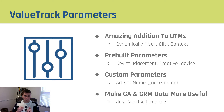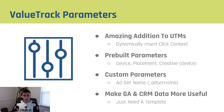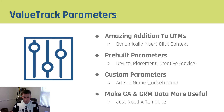Value track lets you put prebuilt parameters that are dynamically populated, so you can look at things like device, placement, the creative, the keyword that someone searched for, the position of the ad — all of those little details. Or you can create custom parameters and have them dynamically added to your UTM tracking live out in the wild. Why this is so great is it makes your Google Analytics and CRM information more useful, allowing you to determine which specifics are causing more conversions, more sales, and more profit for your business.